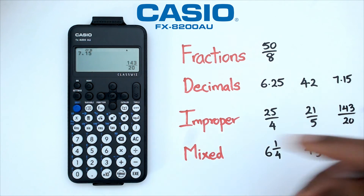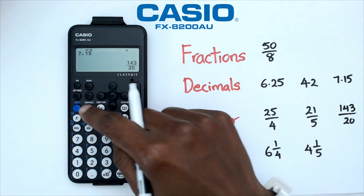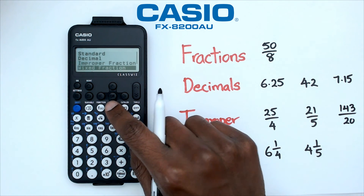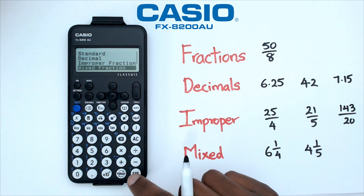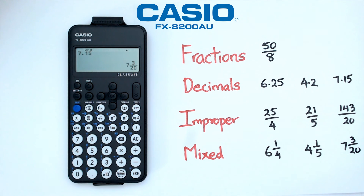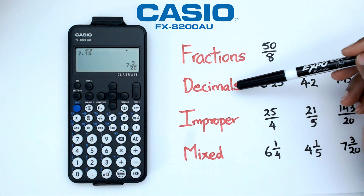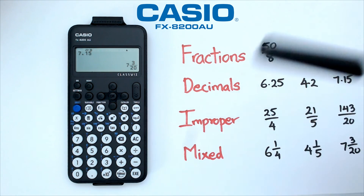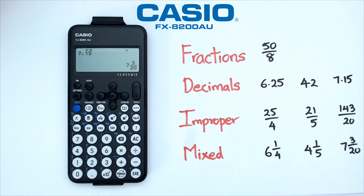Now let's say we want to convert this into a mixed fraction. Click on Format, go down to Mixed Fraction, and that gives us 7 and 3 over 20. So folks, that's just a quick video to show you how to change your number between fractions, decimals, improper fractions, and mixed fractions — or any other combination of those four.